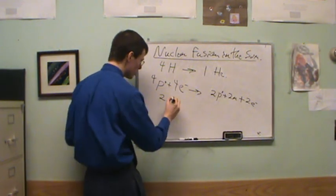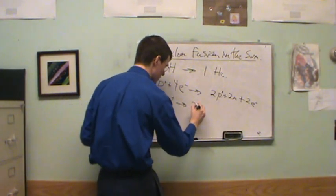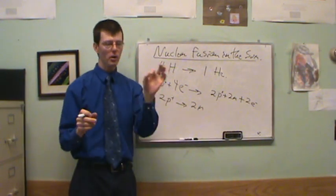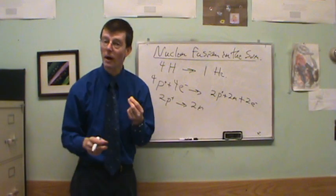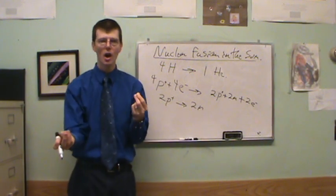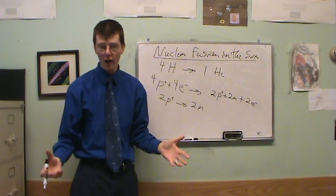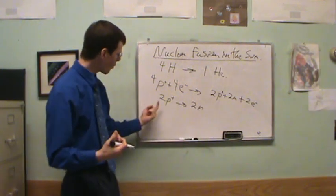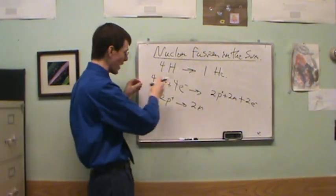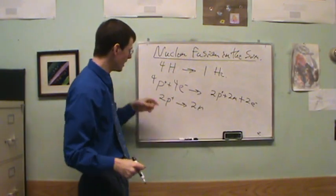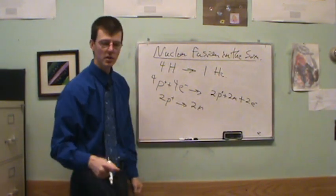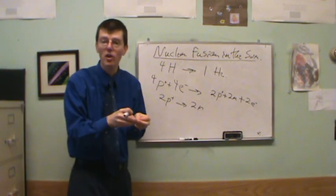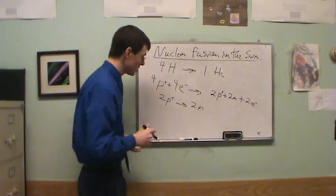Now the problem with that is, if you take a proton, every proton has a positive charge. A neutron has no charge. So you can't destroy charge. It's got to go somewhere. You can't create charge out of nothing. In order to run this reaction turning hydrogen into helium, you got to take these protons and turn them into neutrons. So where does the positive charge go?